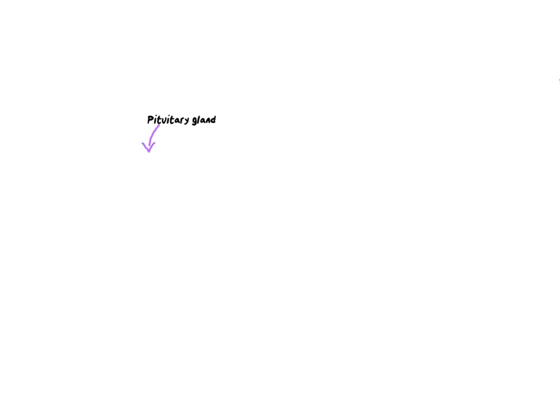Now we get to the more technical aspect of explaining the menstrual cycle — this is probably the most difficult part. We start the journey with the pituitary gland, which specifically secretes FSH — the follicle-stimulating hormone. FSH is then sent to one of the primary follicles in the ovary, which stimulates it — making it grow and get bigger.